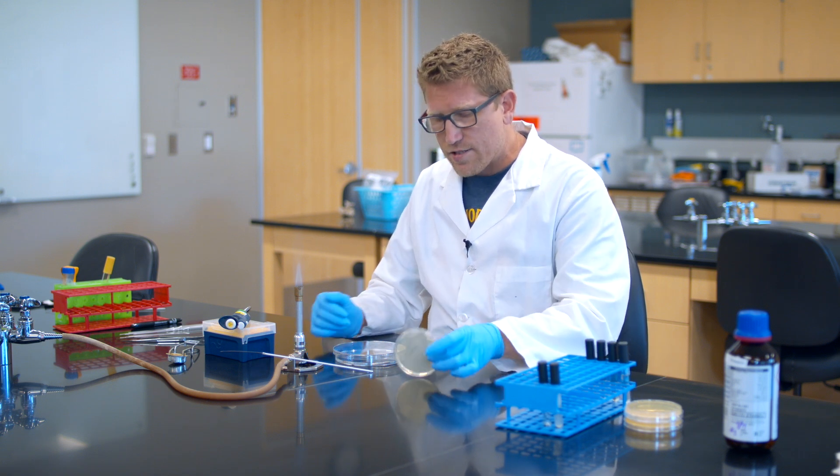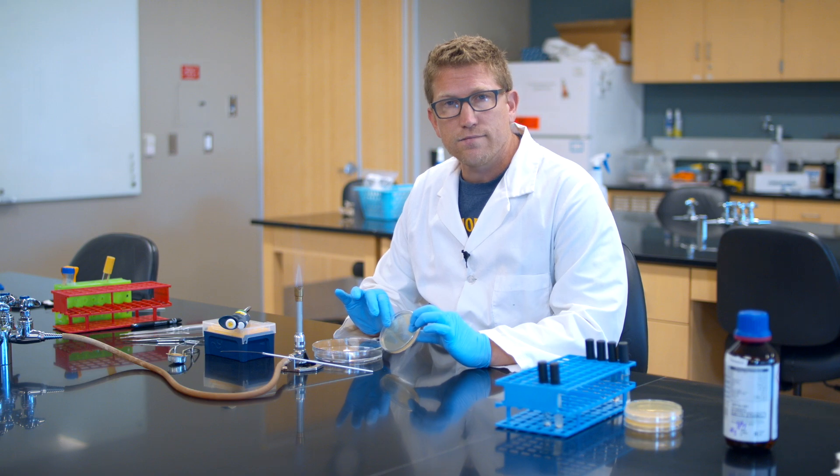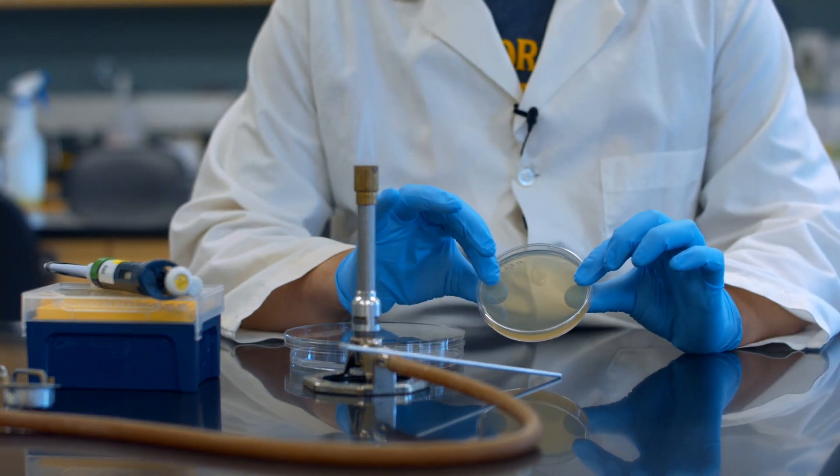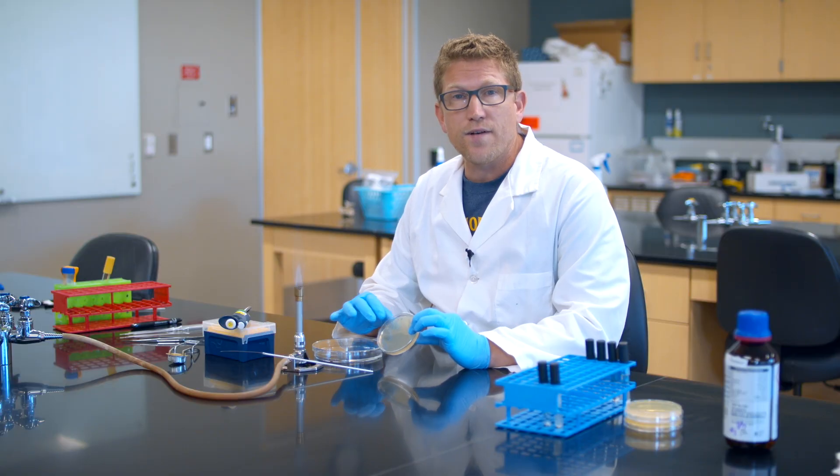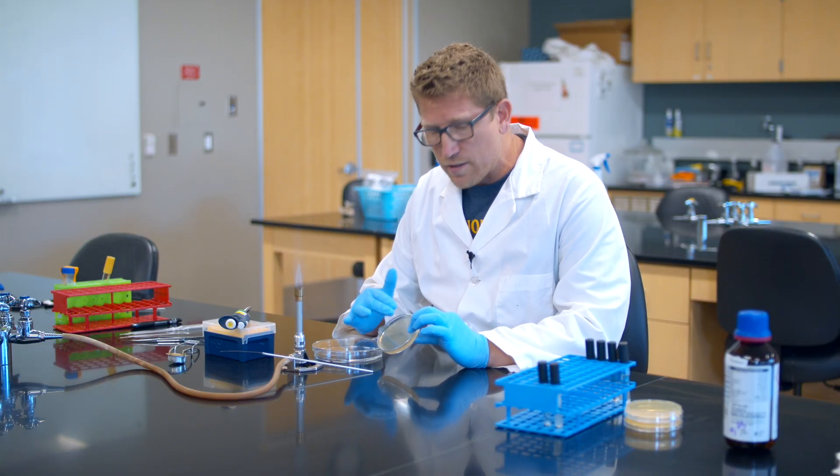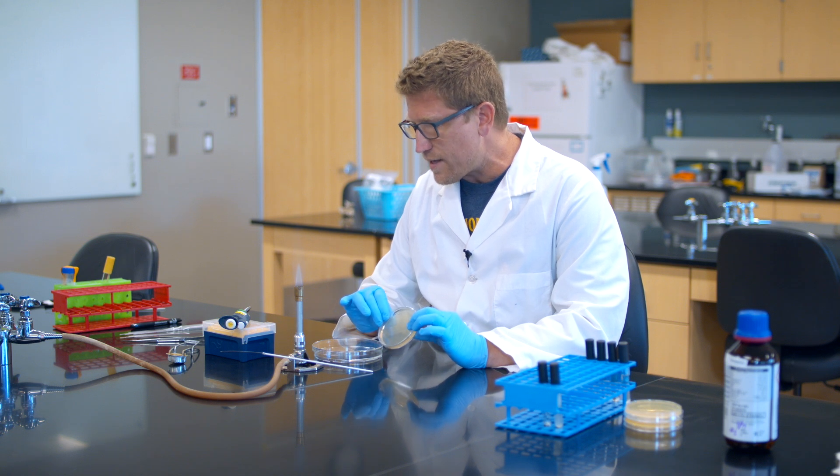So what I've got is a sterile petri dish, LB agar. This is a nutrient recipe that the bacteria like that encourages their growth with a solidifying agent agar in it and we should be able to get colony growth on the surface of this.